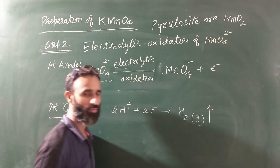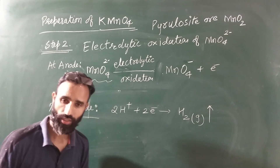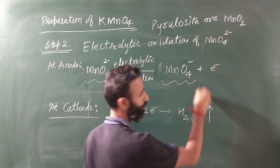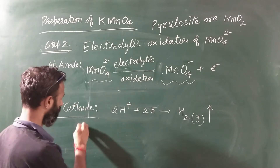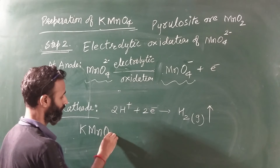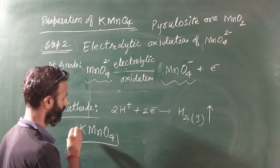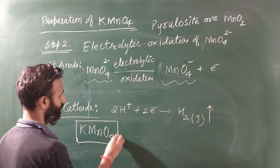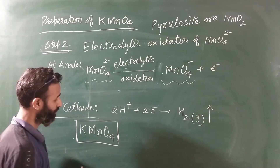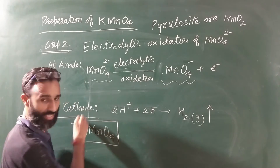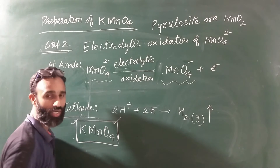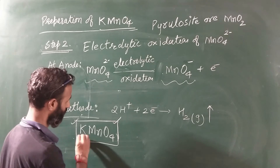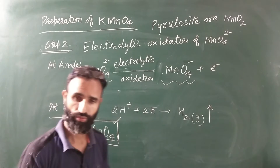H2 gas is liberated at the cathode. After the reaction is complete, we filter it and then concentrate the solution by evaporation to get the crystals of KMnO4.